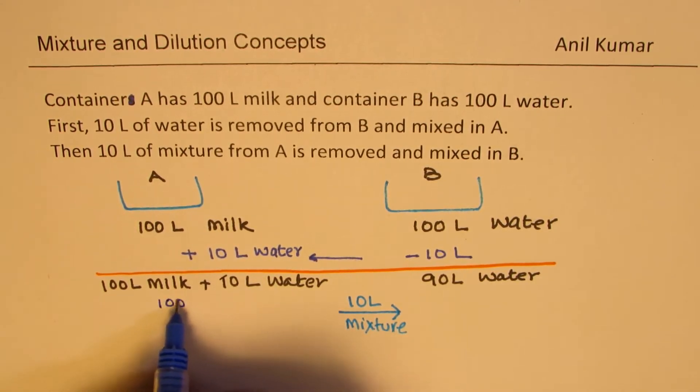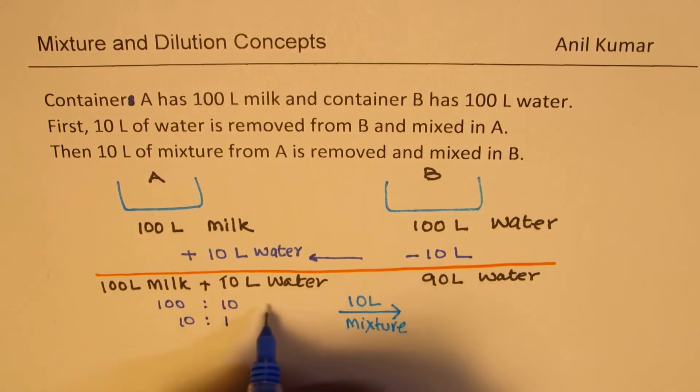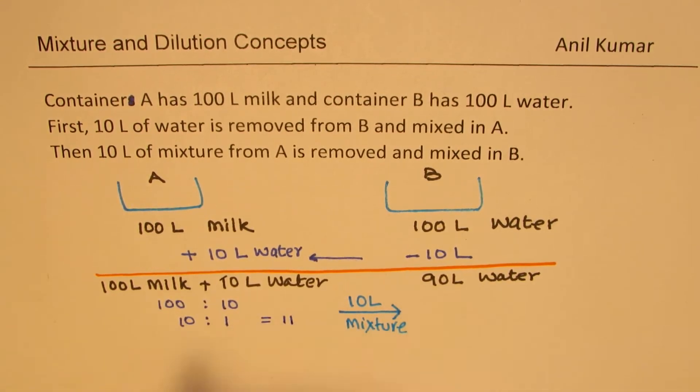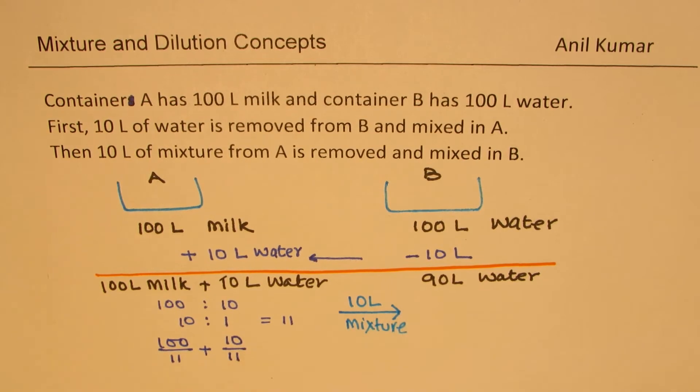So you can think like this. This ratio is 100 is to 10 which is 10 is to 1. That is the ratio. So the total amount is 11. If I want 10 litres then in that case I have to take 10 out of 11 of water and milk will be 100 out of 11.